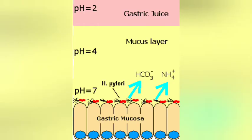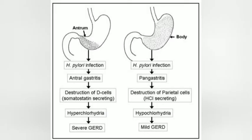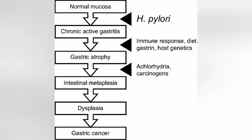Pathogenesis: The bacteria produces urease, which produces ammonia and results in an alkaline environment. The ammonia allows the bacteria to survive in the acidic gastric environment. The bacteria colonize the antrum of the stomach, and mucosal inflammation leads to atrophy. Hypochlorhydria causes an increase in gastrin.